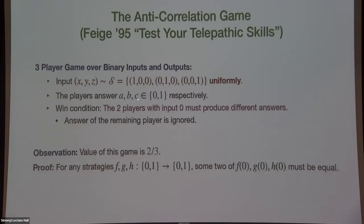The value of this game is 2/3. Consider the strategy: A is always 1, B is always 0, C is always 0. The players win on the last two inputs (where player one is involved) but lose on the first. For any strategy F, G, H from {0,1} to {0,1}, by the Pigeonhole principle, two of F(0), G(0), H(0) must be equal — so the players will lose on the corresponding input. Thus the value is exactly 2/3.